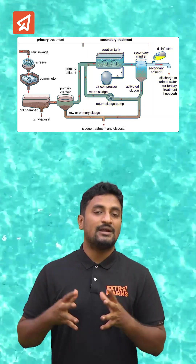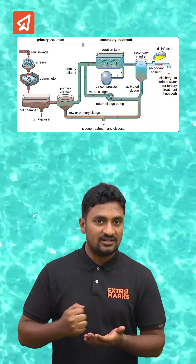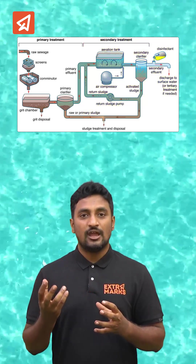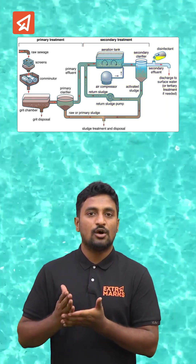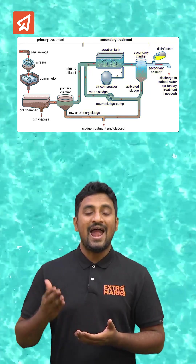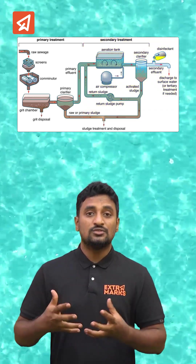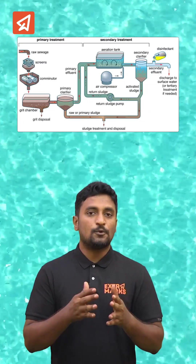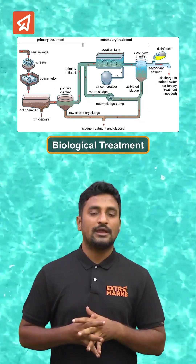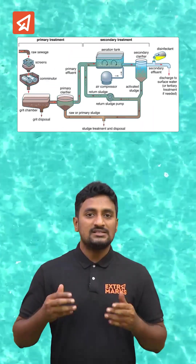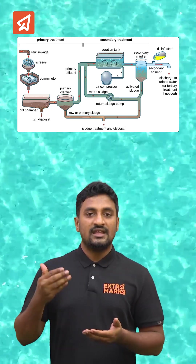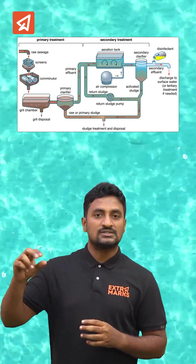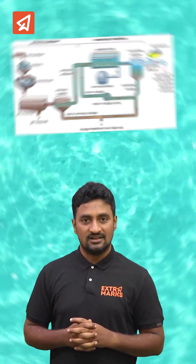In the secondary treatment aeration tanks, the effluent is constantly stirred and oxygen is supplied, so the microorganisms — aerobic organisms found in the primary effluent — start breaking down the organic matter. Their growth increases and they form what we call floc. Once the BOD decreases, the effluent is let down to the settling tanks where these flocs get separated, which we call activated sludge.